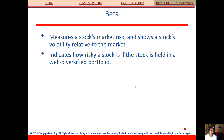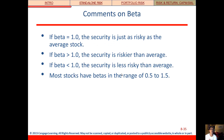Beta measures a stock's market risk and shows a stock's volatility relative to the market — how that stock's returns move with market returns. It indicates how risky a stock is if held in a well-diversified portfolio. Beta is a standardized measure, like correlation, meaning it tends to range between plus and minus one.